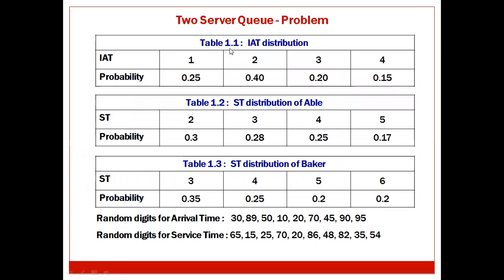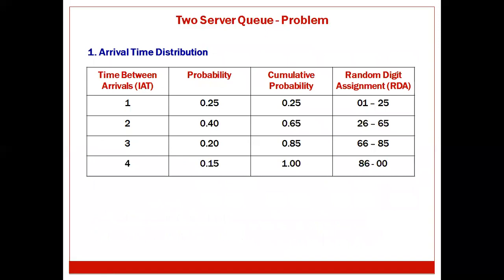Table 1.1 is for the IAT distribution with the given probability. The second table is the service time distribution of Able, with ST values of 2, 3, 4, 5 and corresponding probabilities. The ST distribution of Baker has values 3, 4, 5, 6 with corresponding probabilities. Random digits for arrival time are: 30, 89, 50, 10, 20, 70, 45, 90, and 95 — nine numbers total since the first arrival time is zero. Ten random digits are given for service time.